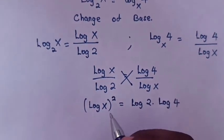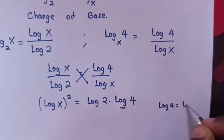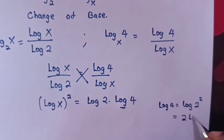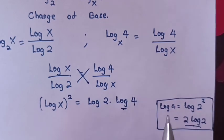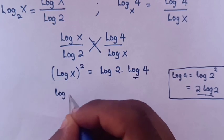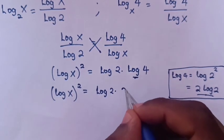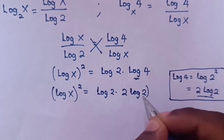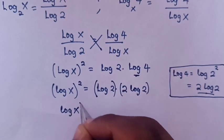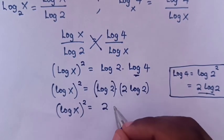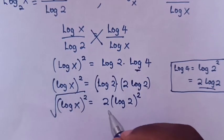Now, log 4 equals log 2 squared, which equals 2 log 2. So we substitute this into our equation. It becomes (log x) squared equals log 2 times 2 log 2, which equals 2 (log 2) squared. Then we apply square root to both sides.